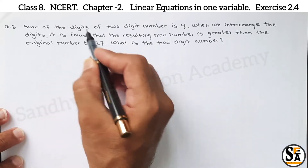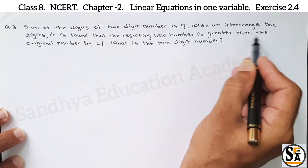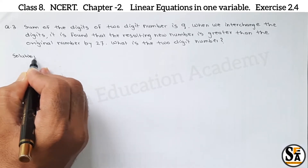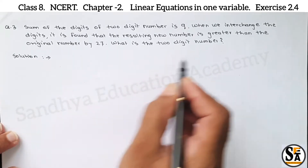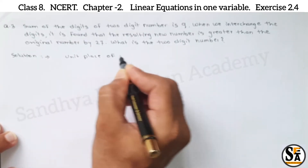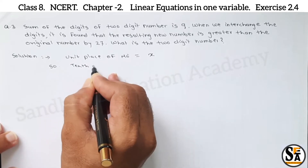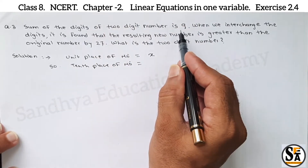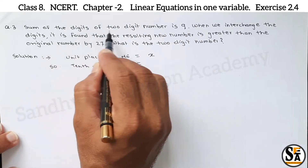Now see the third question. Question number 3: sum of the digits of a two digit number is 9. When we interchange the digits, it is found that the resulting new number is greater than the original number by 27. What is the two digit number? In the question, a two digit number is asked. We will assume the unit place of the number is x. Then from the condition that the sum of the two digits is 9, the 10th place of the number is 9 minus x.